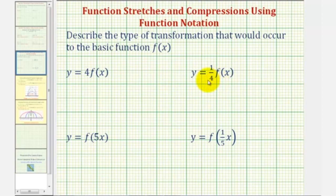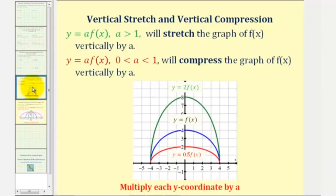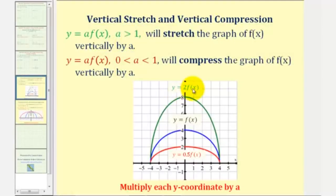To better understand what's happening here, let's take a look at some notes and some graphs. Let's first consider y equals a times f of x, where y equals f of x would be the graph of this middle function here in blue. Let's first consider what happens when a is greater than one — let's say a equals two. Notice if we graph y equals two times f of x, the graph is vertically stretched.